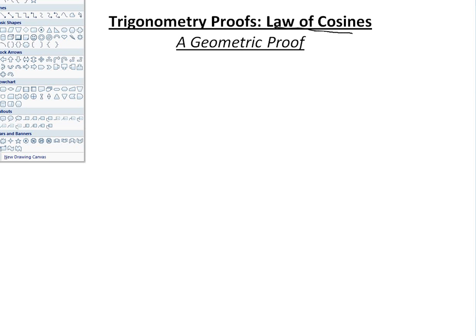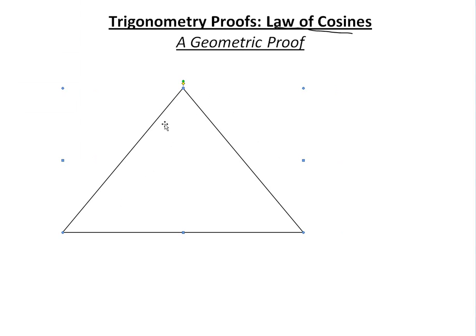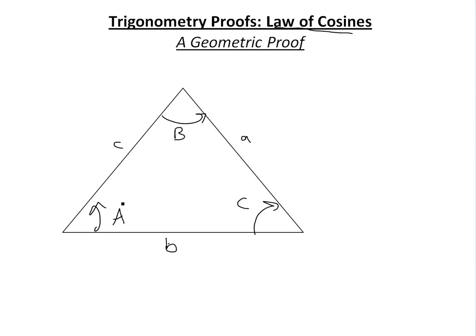Basically, the law of cosines is: if you have a triangle where this angle is A, this angle is B, this angle is C, and the corresponding opposite side lengths are labeled a, b, and c to correspond with these angles, then C squared is equal to A squared plus B squared minus 2AB times cosine of C.